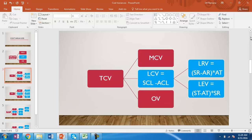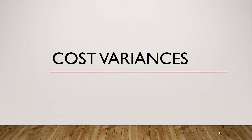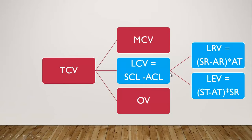Hello and welcome to our discussion on cost variances. We will continue our focus on labor cost variance. Labor cost variance is generally due to the labor rate variance and labor efficiency variance. Labor rate variance is the difference between the standard rate and actual rate, and labor efficiency variance is the difference between standard time and actual time.